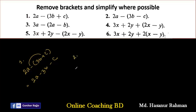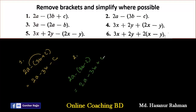Now number 2. Number 2 says: 2a minus (3b minus c). How can you solve it? 2a, minus into 3b gives minus 3b, minus into minus c gives plus c. So that will be the answer of number 2.